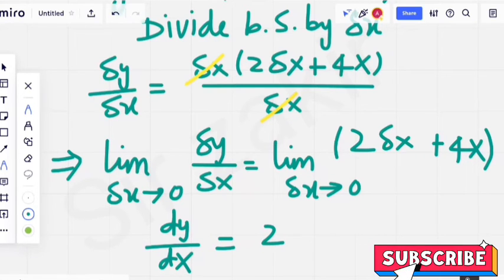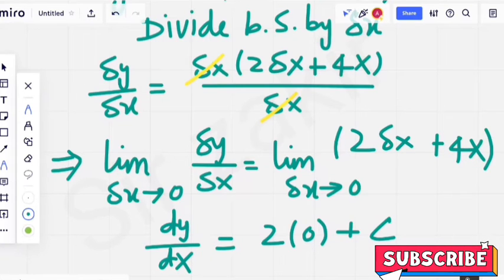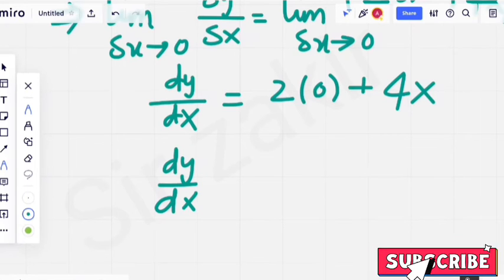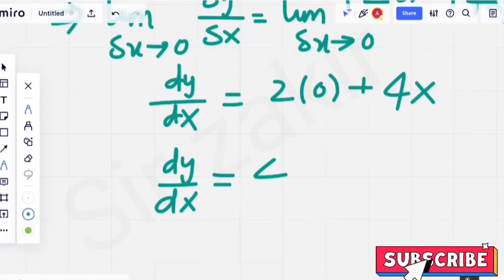We will apply limit on right hand side. Delta x becomes 0. Plus 4x. So dy by dx is equal to 4x.